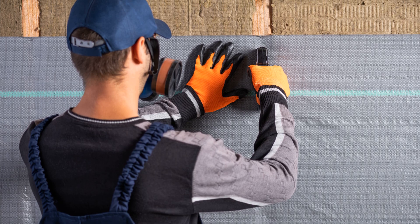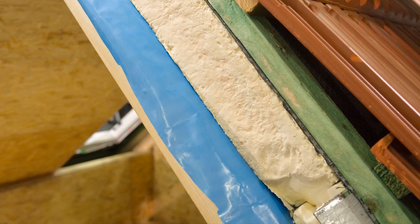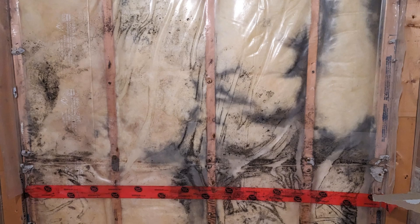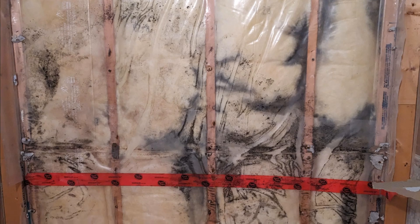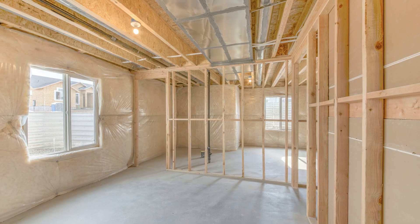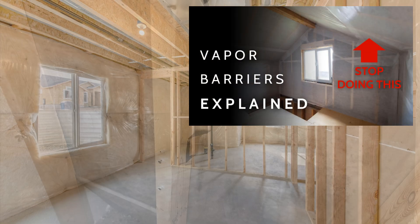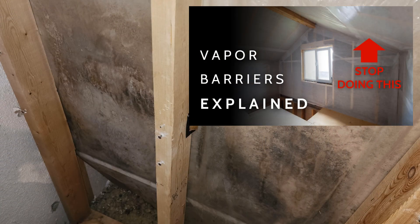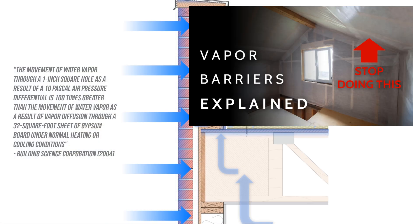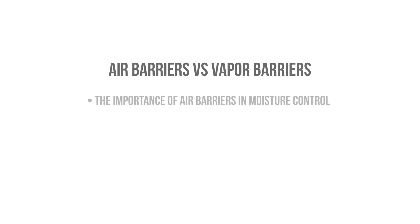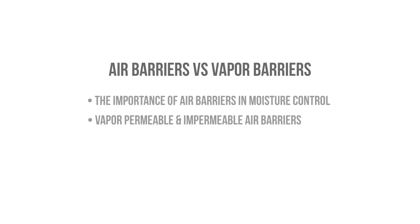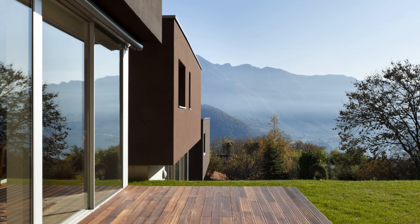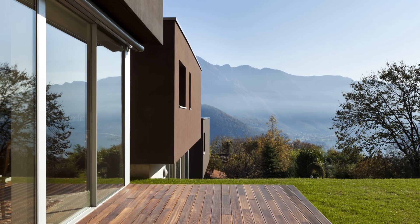Air barriers and vapor barriers are terms that are often thrown around interchangeably in the building industry, but knowing the differences between the two is critical if you want to avoid future disasters. I discussed how to use vapor barriers in another video called 'You're Using Vapor Barriers Wrong,' and we briefly touched on the importance of air barriers, but we didn't really get into the specifics. In this video, we're talking about the importance of air barriers with regard to moisture control.